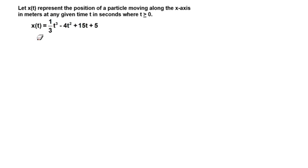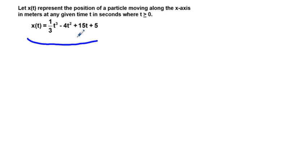We're going to look at a typical calculus problem — a particle motion problem. Let x of t represent the position of a particle moving along the x-axis in meters at any given time t in seconds, where t is greater than or equal to zero. The position function is x of t equals one-half t cubed minus 4t squared plus 15t plus 5, where t is in seconds and position is in meters.